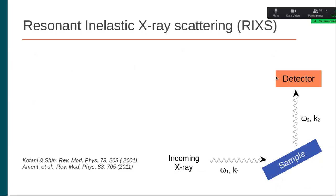Let me first start by introducing what resonant inelastic X-ray scattering is. In this scattering technique, an incoming X-ray photon is scattered through a sample. By controlling the energy and the momentum of this incoming photon, and by measuring the energy and the momentum of the emitted photon, we can get information about the electronic structure of our sample.